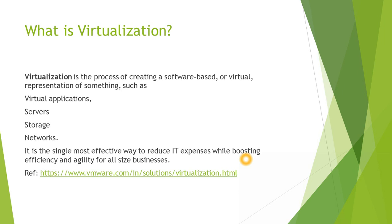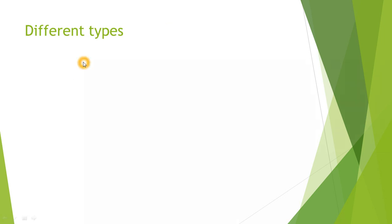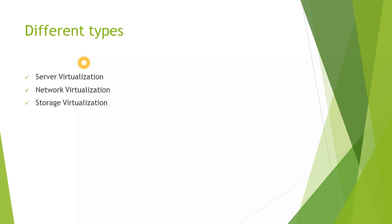We have applications virtualized, servers virtualized, storage virtualized, and networks virtualized. Whether you're a small or large business, you need to consolidate your IT budget and your servers, and work more efficiently. This is where virtualization and VMware can help. The different types of virtualization include server virtualization, network virtualization, storage virtualization, and desktop virtualization for end users and user computing.